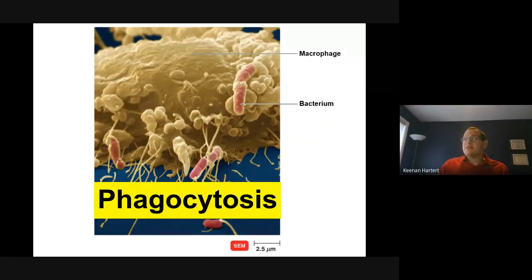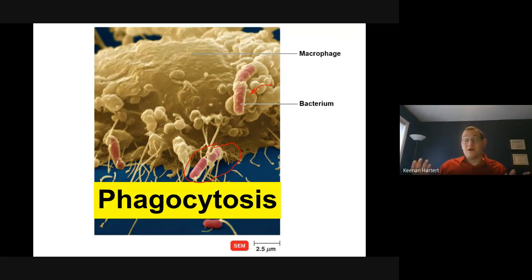This is phagocytosis. Here you have a bacteria and this is a big macrophage — one of your cells. They essentially run and catch bacteria, eat them, and digest them into tiny little pieces. Number one, that gets rid of bacteria. We'll revisit this in the adaptive immune system because macrophages are the link between the innate and the adaptive. As far as innate defenses go, they just gobble up stuff that does not belong.